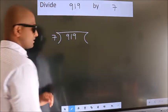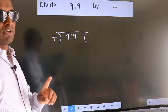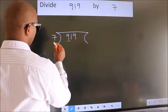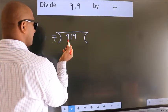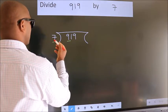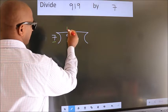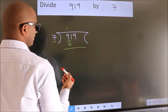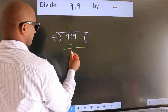This is your step 1. Next, here we have 9, here 7. A number close to 9 in 7 table is 7 once 7. Now we should subtract. We get 2.